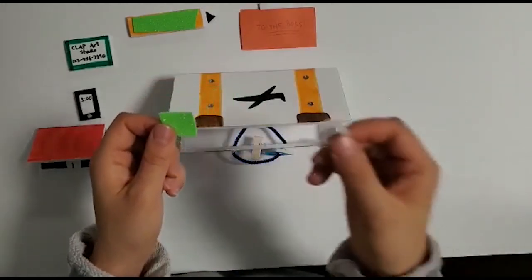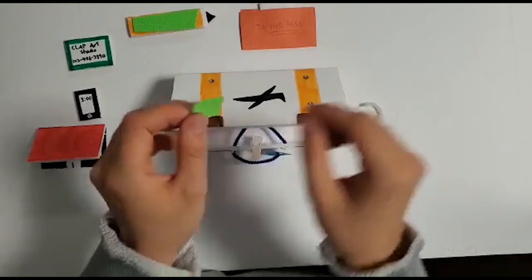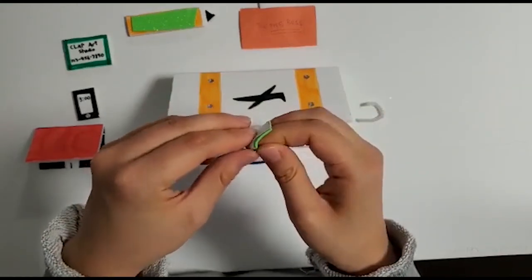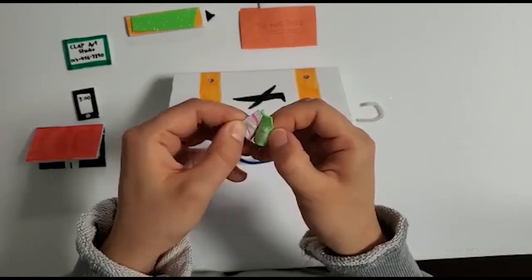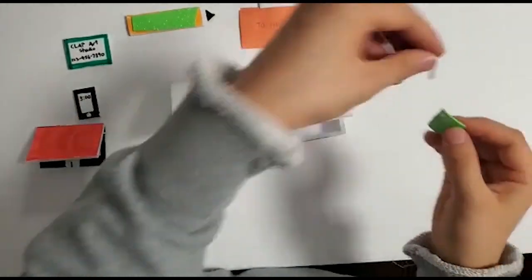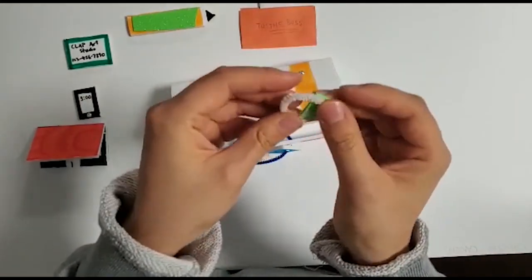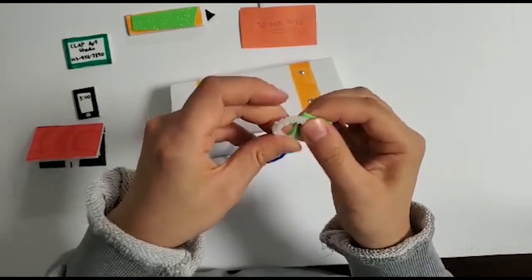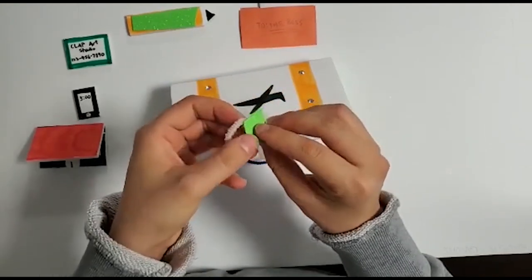Lastly, we're going to make a clasp for the briefcase. Cut a square from the glitter foam sticker sheet and a 2 inch piece of pipe cleaner. Shape the pipe cleaner into an arch and stick the ends onto the foam sticker. Stick the foam sticker onto the flap of the briefcase.